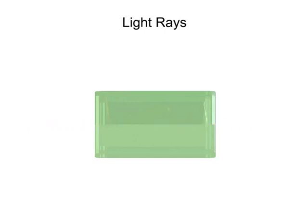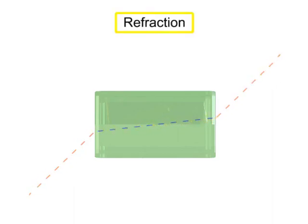However, if the light beam arrives at the medium surface at an angle, not only will its speed be reduced, but it will bend due to a process called refraction.